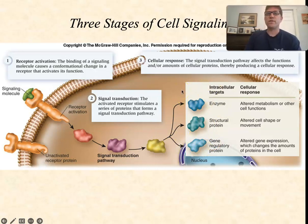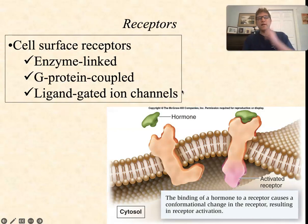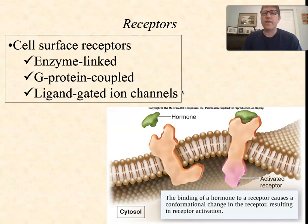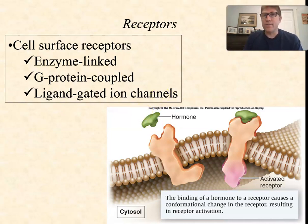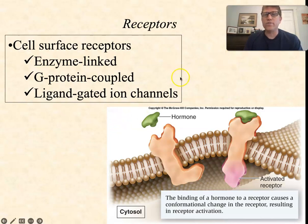Let's focus first on the receptor itself and how it gets activated. There are three main types of receptors that are found on the surface of a cell: enzyme-linked, very common; G-protein-coupled receptors; and ligand-gated ion channels.